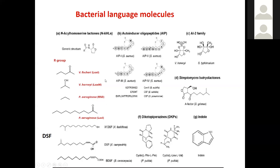The diversity of quorum sensing signals is very similar to the Indian language Sanskrit, where Sanskrit is the core and different dialects such as Bengali or Devanagari are added — a mother language with different regional languages. In that way bacteria vary their language. In our lab we work on a family of molecules called diffusible signal factor, DSF, a fatty acid-like signaling molecule that also adds different acyl chains to vary the language.